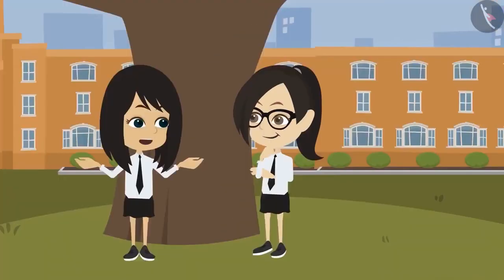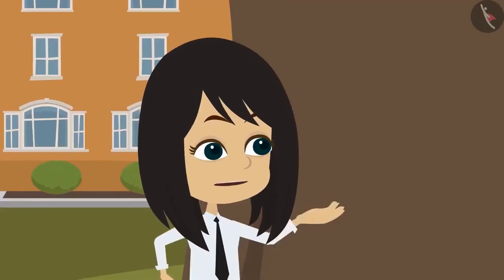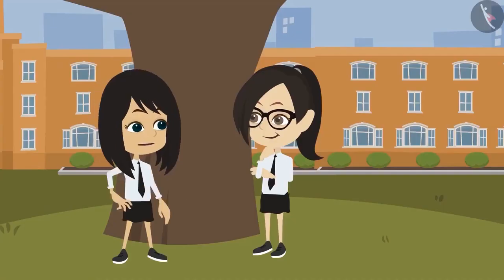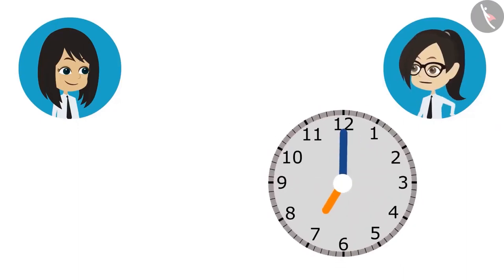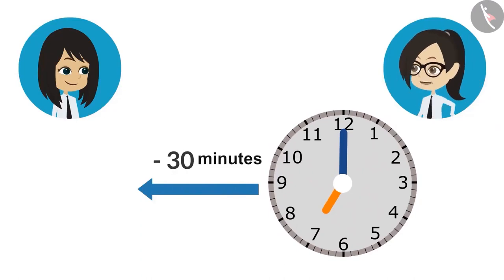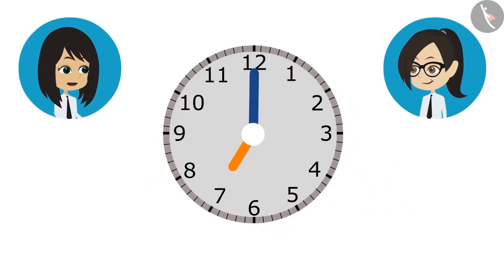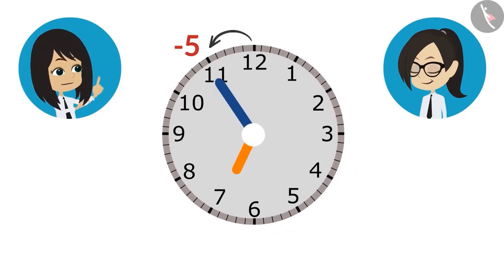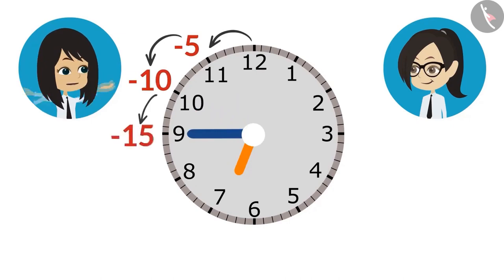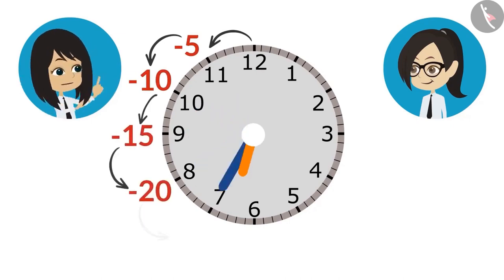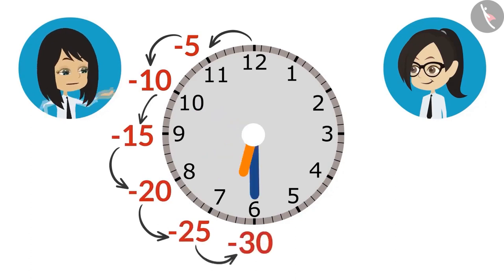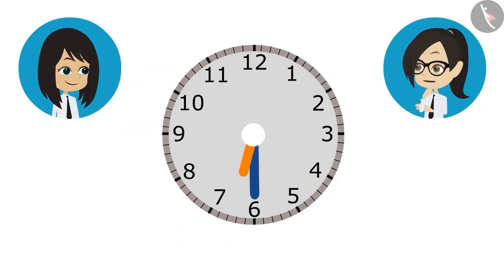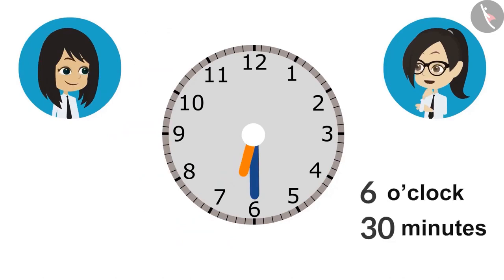Now tell me — to come to the amusement park tomorrow, we have to reach school at 7 o'clock in the morning. If we take 30 minutes from home to reach school, then what time do we have to leave from home? We will draw 7 o'clock in the clock and reduce 30 minutes. From 12 to 11 reduces 5 minutes, at 10 it's 10 minutes, 15 at 9, 20 at 8, 25 at 7, and 30 minutes when it reaches 6. This means tomorrow we have to leave home at 30 minutes past 6 o'clock without fail.